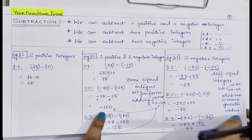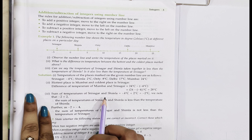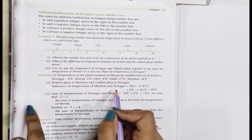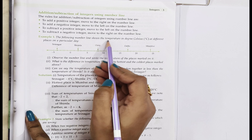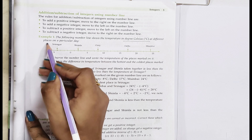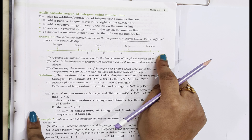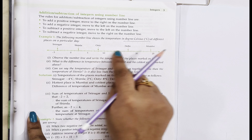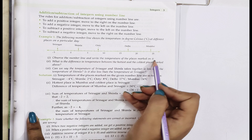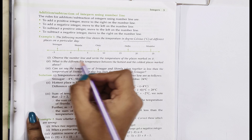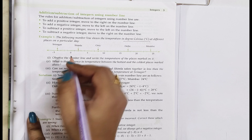Now I will be explaining M.L. Agarwal's examples — this is M.L. Agarwal for class 7 ICSE. Example 1 from the integers exercise: the following number line shows the temperature in degrees Celsius at different places on a particular day. This is one of the applications of the number line — we take a number line and record the temperatures of different places on it. The places marked are Srinagar, Shimla, UTI, Delhi, and Mumbai.